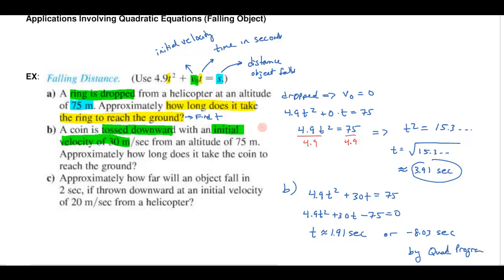Now obviously the negative one that's not going to have any meaning for this problem so this is the one I want I'll circle this one about 1.91 seconds and so by tossing it down obviously it's going to hit the ground sooner right and that's exactly what we found out.